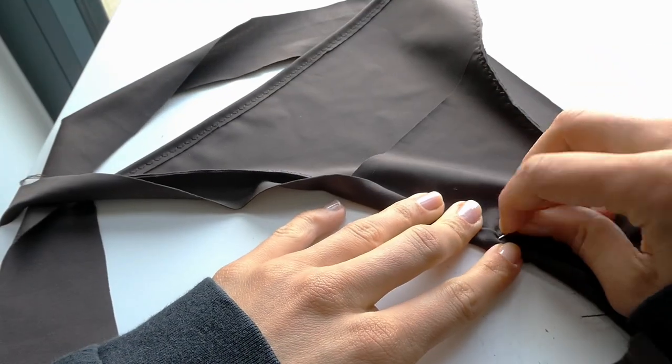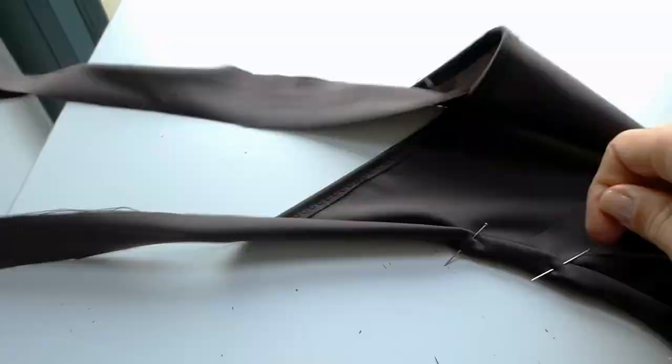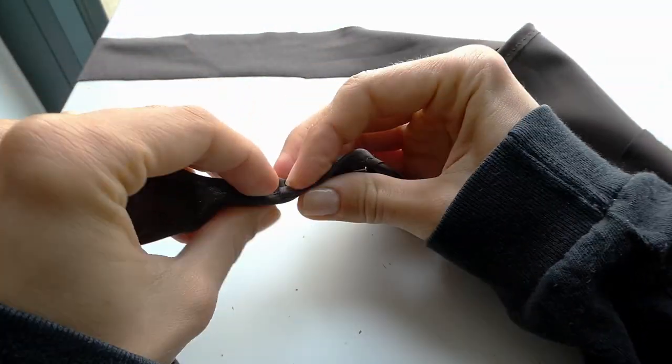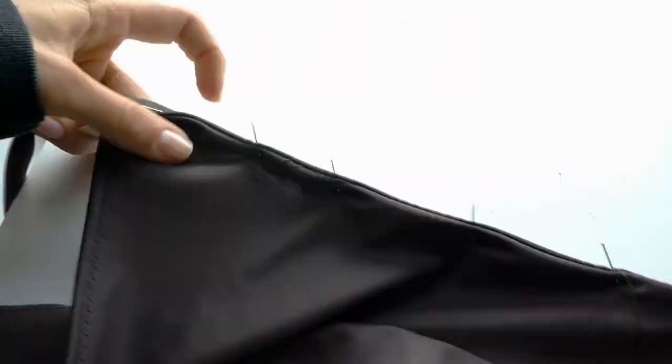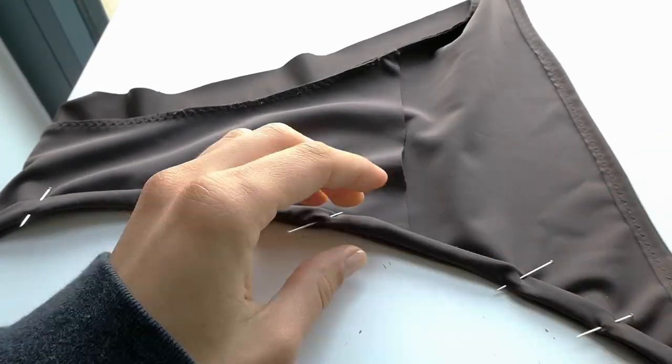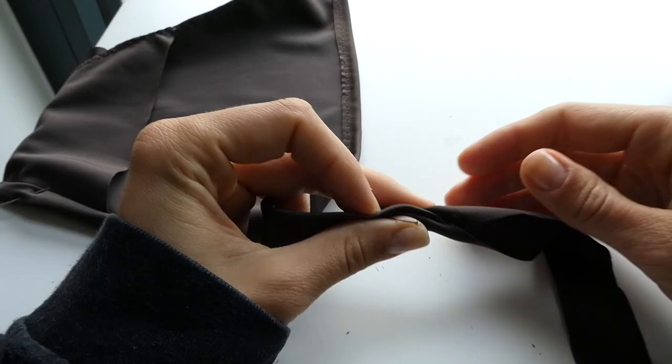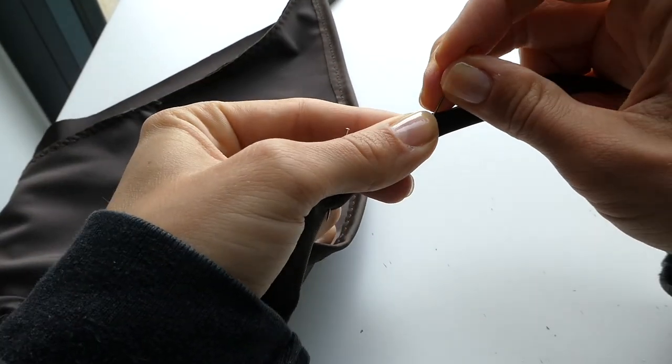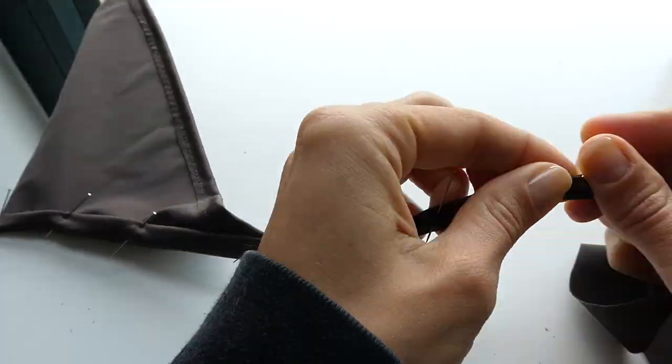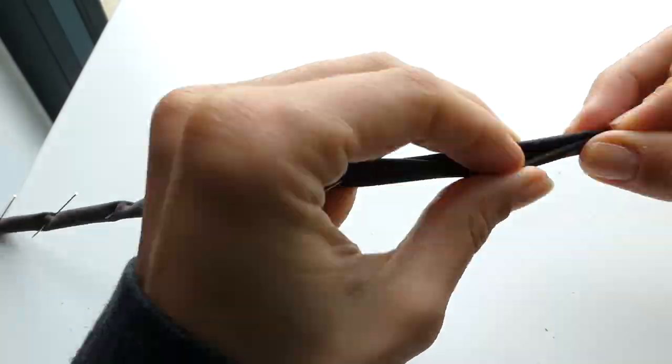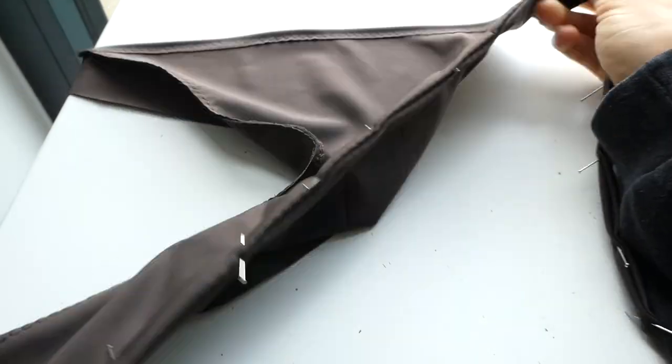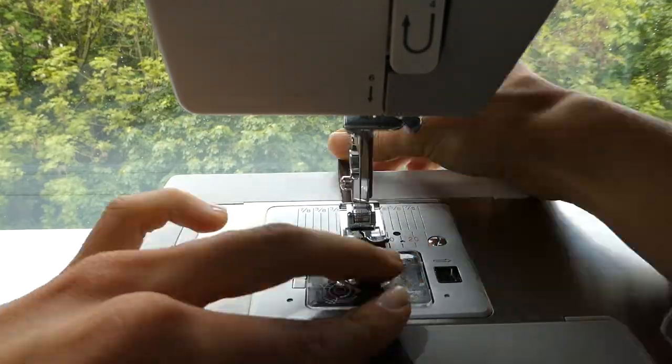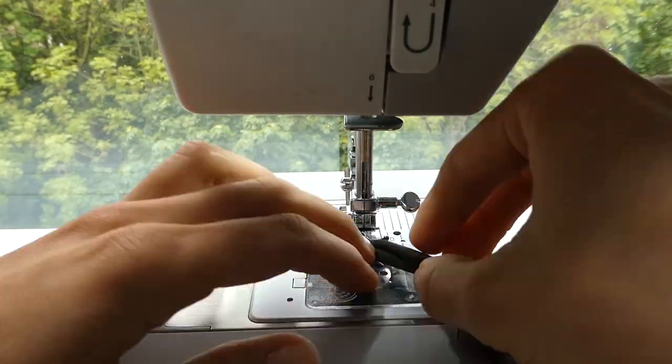So making sure you're pinning both sides as well as all four straps that you've created on each of the corners of the bottoms of your bikini, and now I'm going to sew all along those edges as well as the straps with a zigzag stitch.